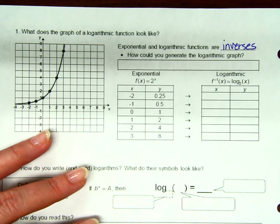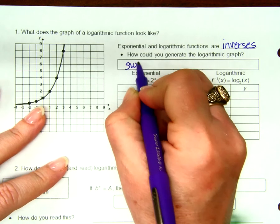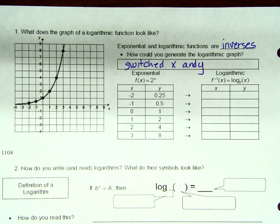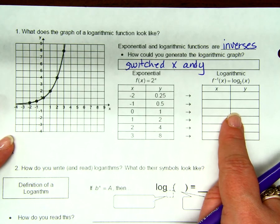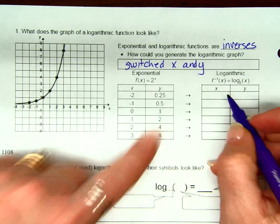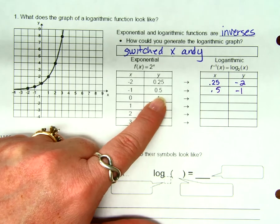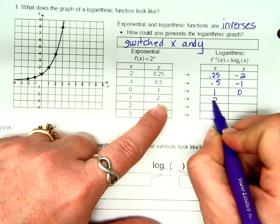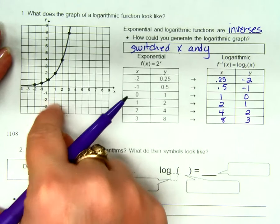Think back to when we talked about squares and square roots, cubes and cube roots. How do we find an inverse function? We switched x and y, and then we solved for y, right? To get the new function. Well guys, if we're given a table for exponential function, how could I find a logarithmic function? Switch x and y. So this is 0.25 and this is negative 2. And this is 0.5 and this is negative 1. And this is 1 and this is 0, because all I'm doing is switching the x and y in the table from exponential to logarithmic, right? Okay? 2 and 1, 4 and 2, 8 and 3. And then I want to plot those new points on this graph right here.